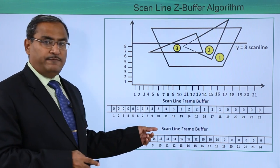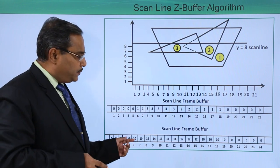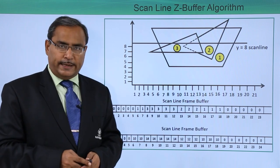This is the scan line frame buffer. Here we are updating the polygon numbers with the respective z values, and in this way the buffer is getting updated.